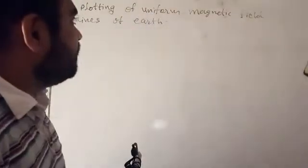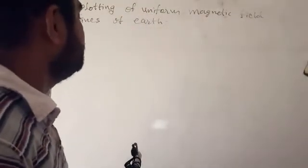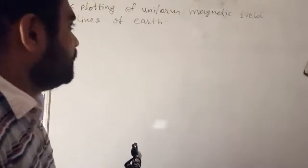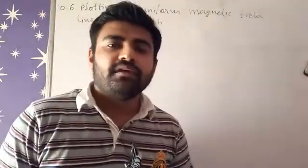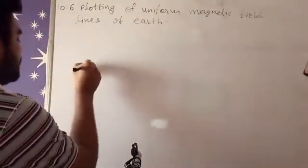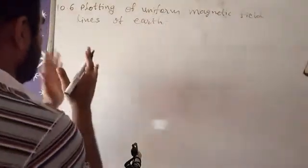Our topic is plotting uniform magnetic field lines of Earth. To find the magnetic field direction and lines, we have to place a magnetic needle at a particular point.